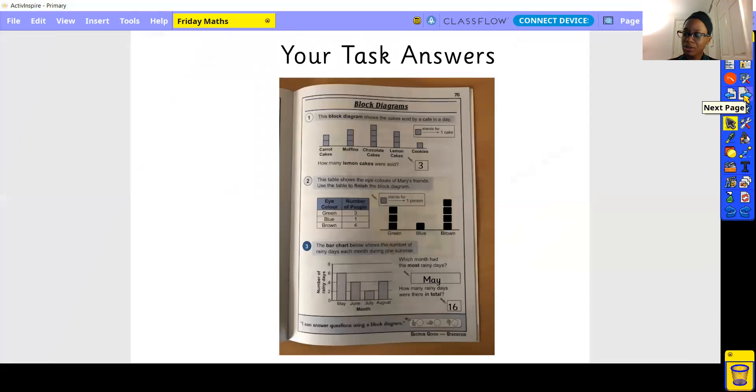And here we have our answers. How many lemon cakes were sold? Three lemon cakes were sold. One, two, three. Good stuff.